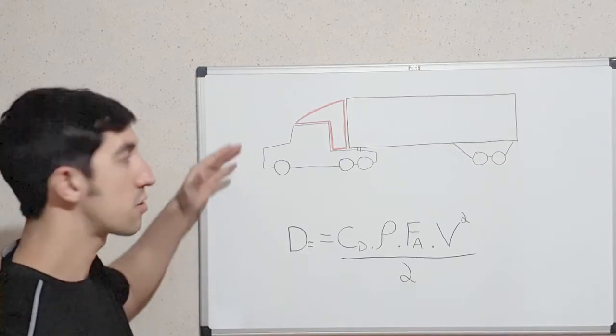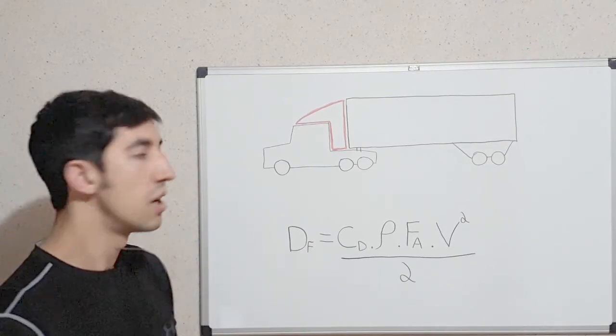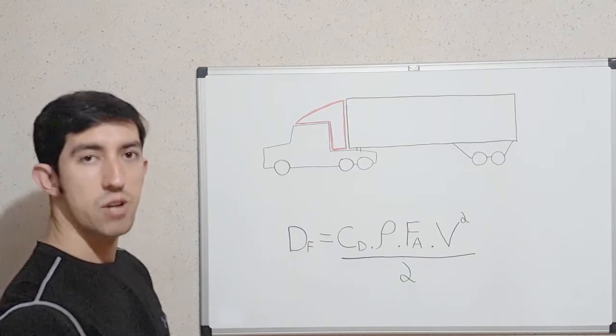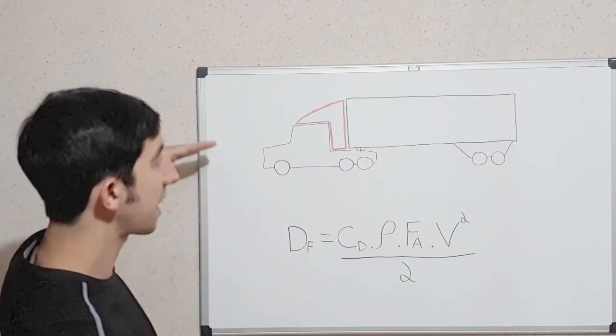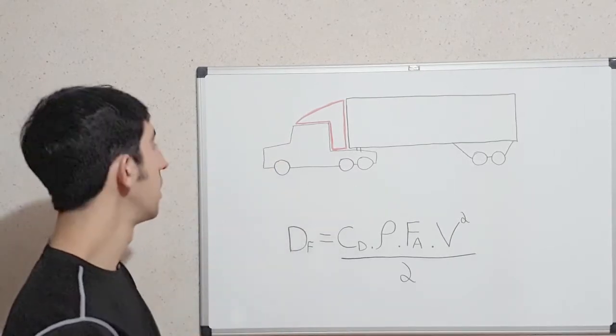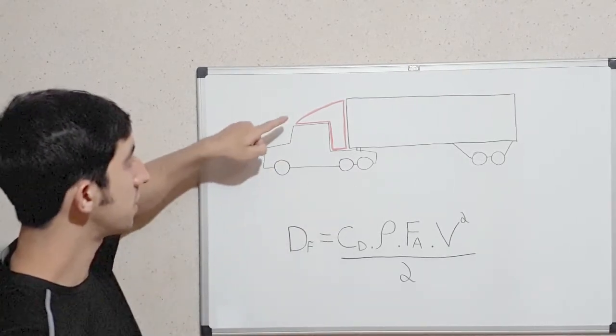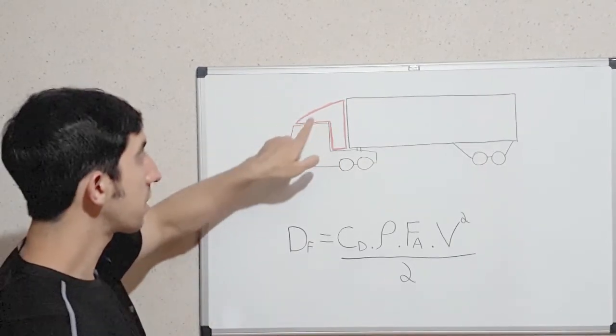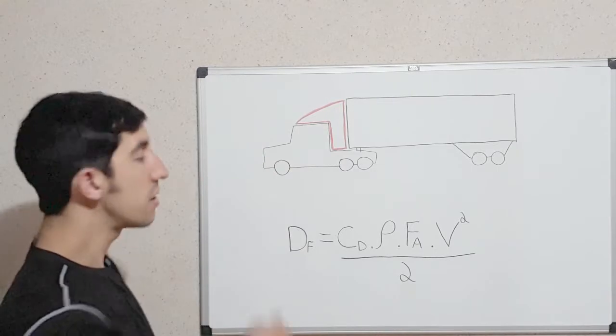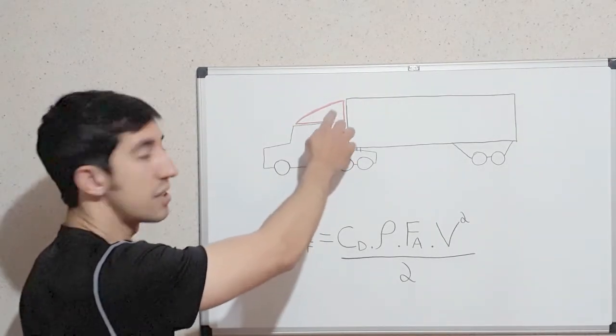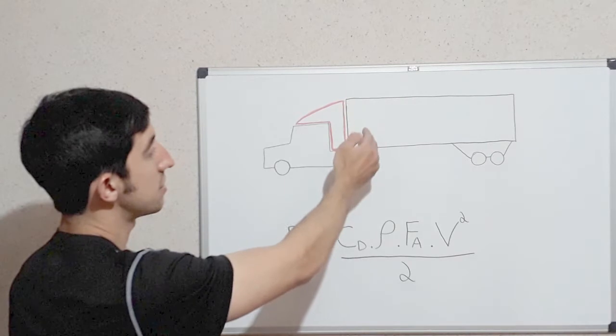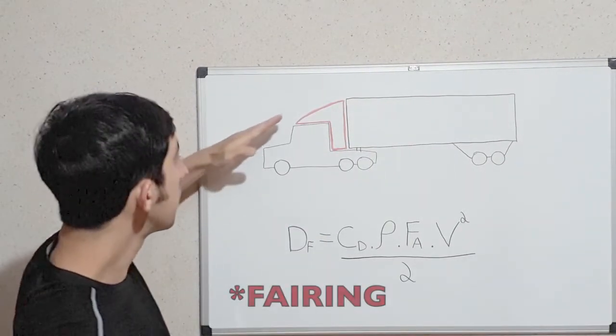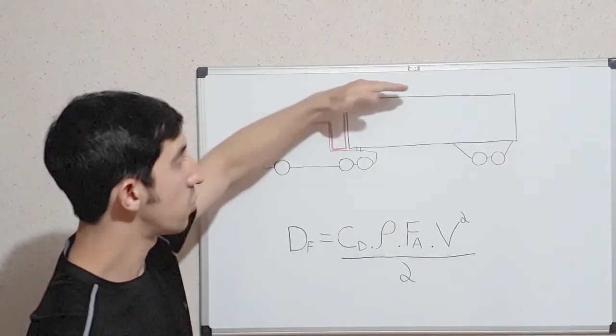We add fairings to the truck or cars or motorcycles to decrease drag. Drag is the force against the truck that is traveling. So this red thing here is the fairing. This fairing here prevents the air to make a turbulence here shocking against the trailer. So the air makes the truck slicker and the air goes up without turbulence.